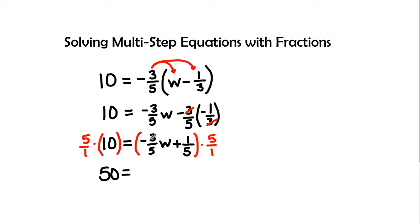I'm going to take five times a negative three is a negative fifteen. Negative fifteen divided by five is a negative three w.